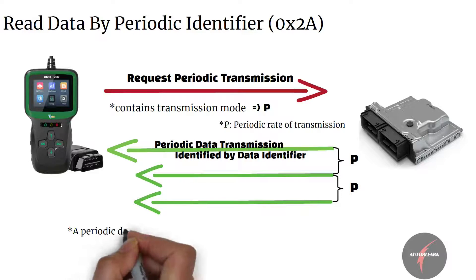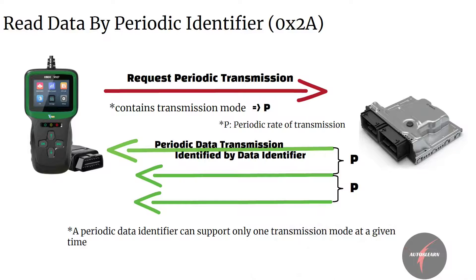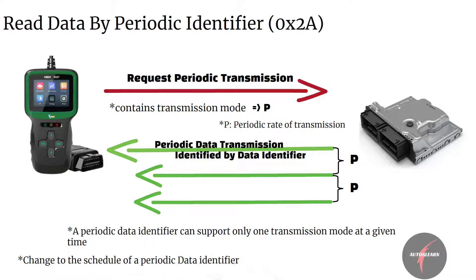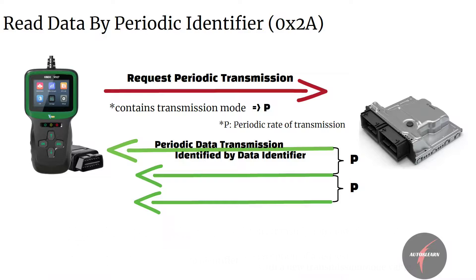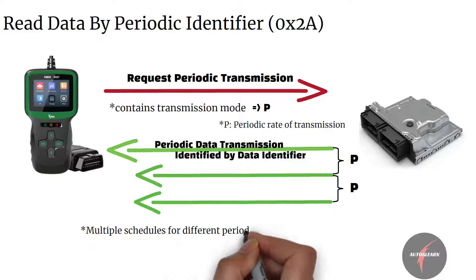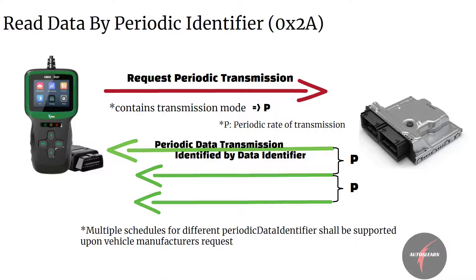A periodic data identifier can support only one transmission mode at a given time. A change to the schedule of the periodic data identifier shall be performed on reception of the request message with the new transmission mode value. Multiple schedules for different periodic data identifiers shall be supported upon vehicle manufacturer's request.